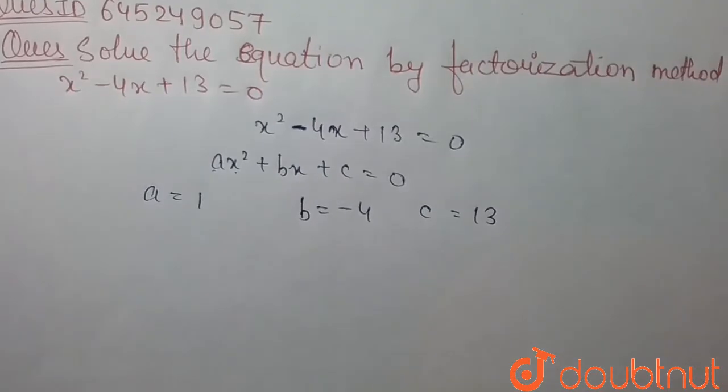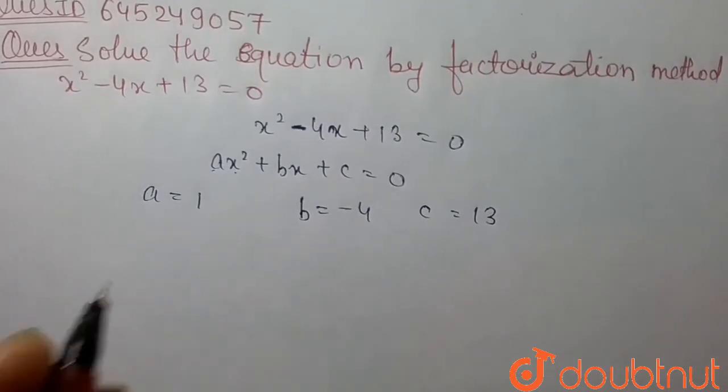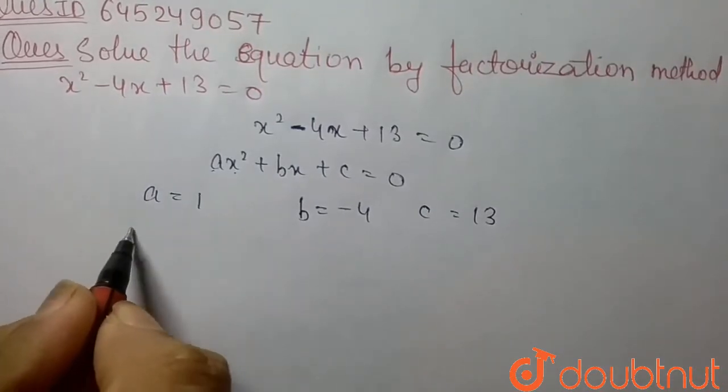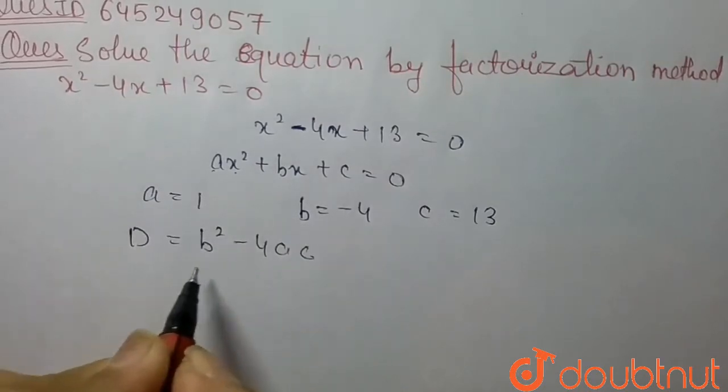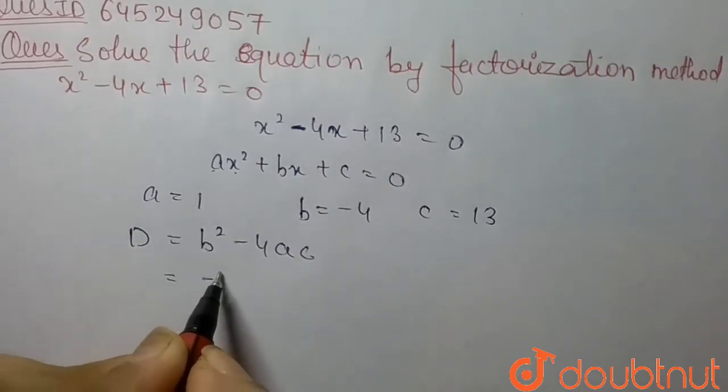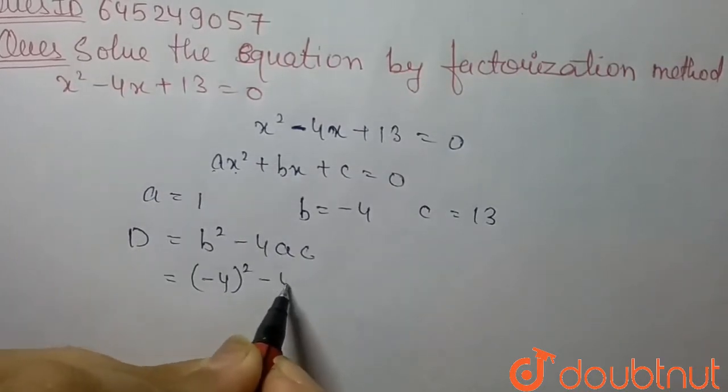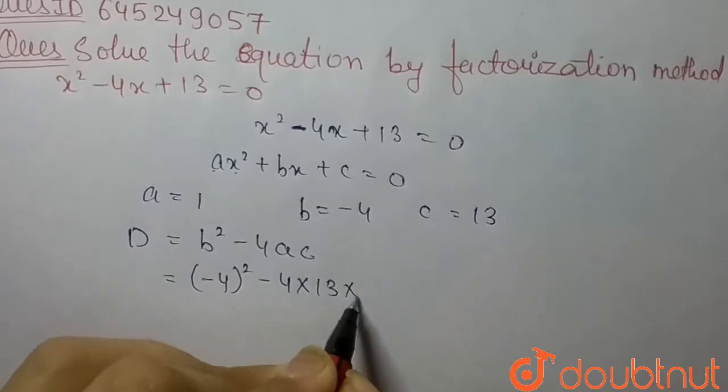First we can find the discriminant of this equation. So the value of D is b squared minus 4ac. So we can put all the values. So we get minus 4 square minus 4 into 13 into 1.